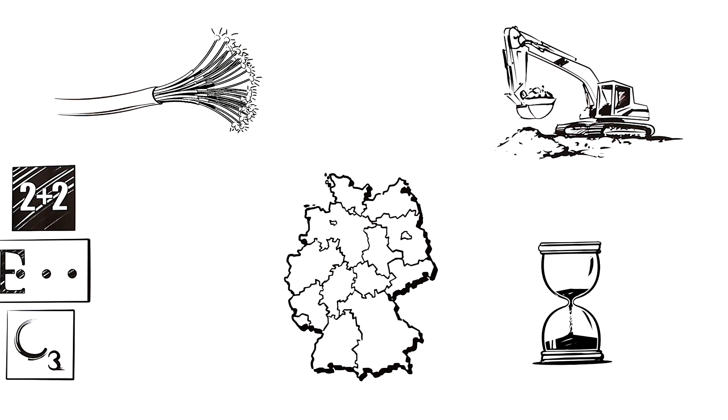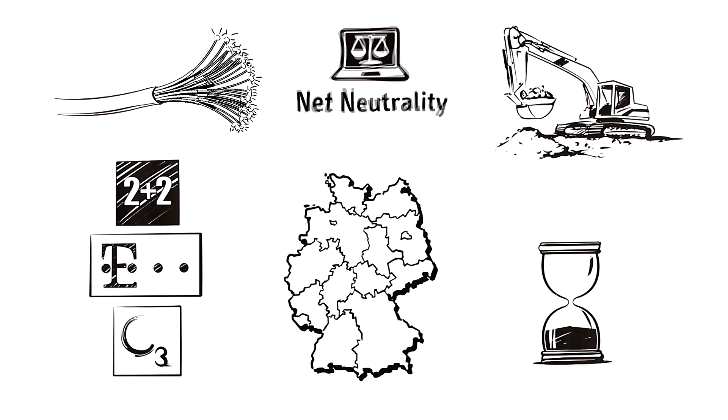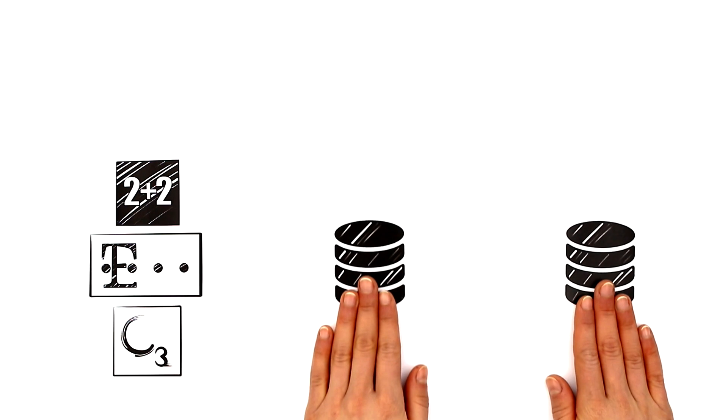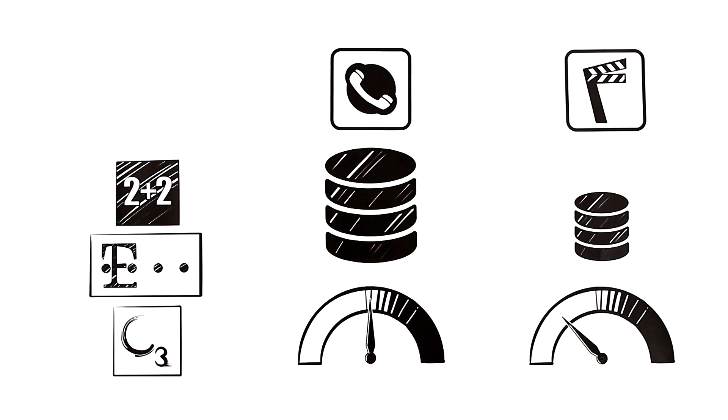The big internet providers have been making repeated attempts recently to water down net neutrality as practiced up until now. They say there's important and less important data. So, for example, in case of a network congestion, streaming services like FlixNet could be slowed down so that phone calls won't be affected and break up constantly.